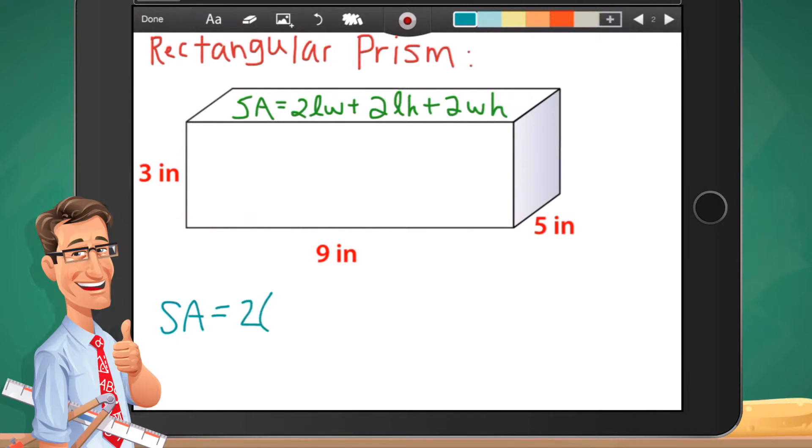2 times the length is 9, the width is 5, plus 2 times the length, we said it was 9, the height in this case is 3, plus 2 times the width and the height. From here you can plug that into your calculator and solve.